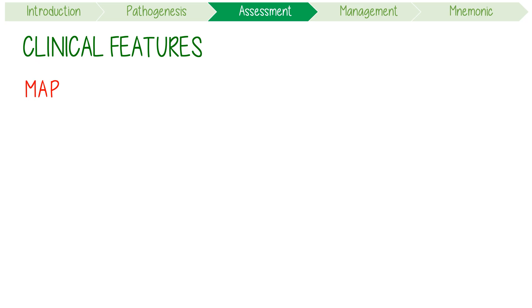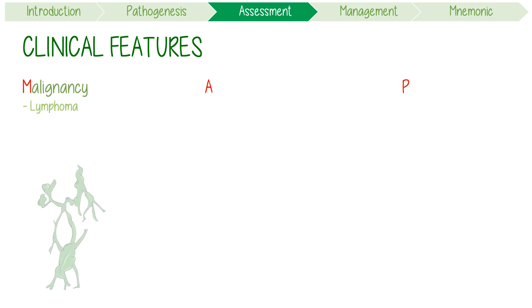Now, if you have GEMs, you might also have a MAP, which is my acronym for the extra-glandular features of SS. M stands for malignancy, specifically lymphoma. This is by far the most serious complication of SS and confers up to a nine-fold increase in risk.